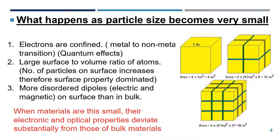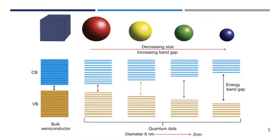A first question that comes to mind while studying nanomaterials is: what happens as particle size becomes very small? The properties of things change when they are made smaller, and this phenomenon is based on quantum effects, which dictate the behavioral properties of particles. Scientists and engineers therefore have the power to adjust and change material properties by changing its size. When particles become smaller and smaller, the surface area increases while the volume remains constant, increasing the surface-to-volume ratio — and that is why specific properties start to dominate.